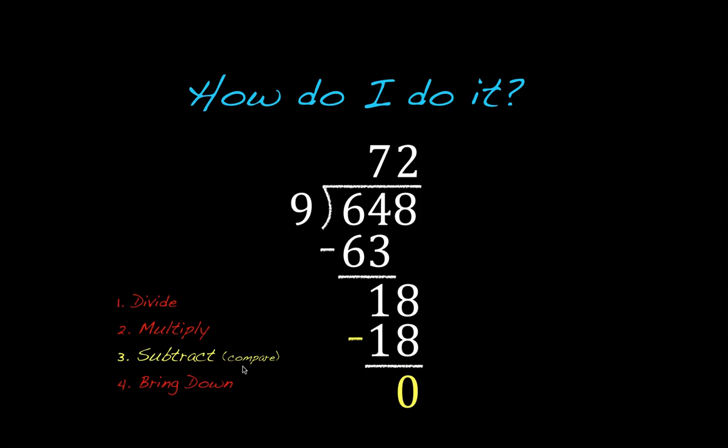Again, very important to compare at this point. 0 is less than our divisor, so we are good to go on to the next step, which would be to bring down, but when we look over here, there is nothing left to bring down, and there is no remainder down here. So at this point, my problem is complete. So 648 divided by 9 equals 72. 72 is my quotient.